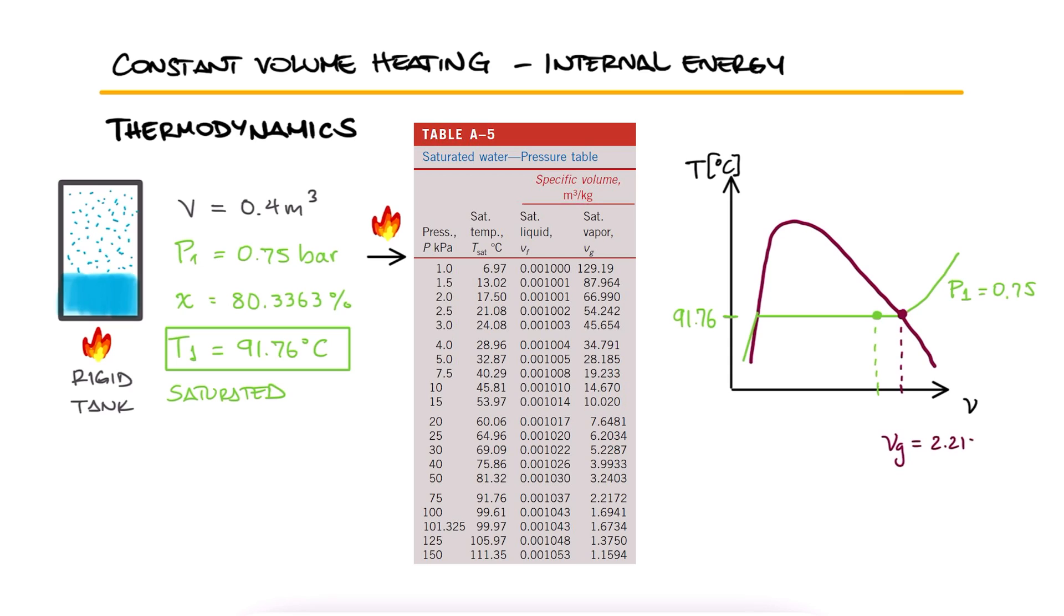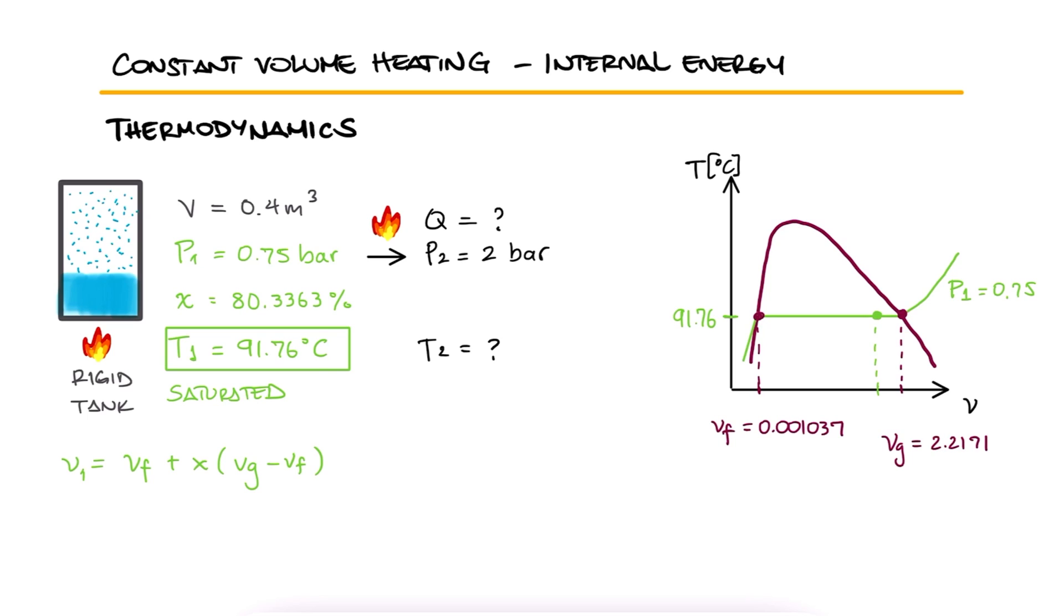Using this table, we also write down VG and VF and use the quality expression to find the current specific volume, particularly for that quality value. With this, we find that the specific volume is 1.781 cubic meters per kilogram.